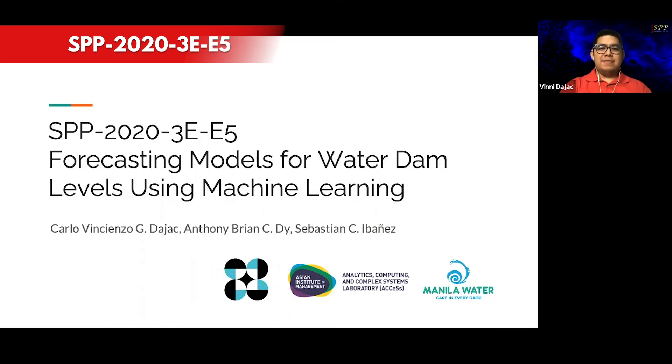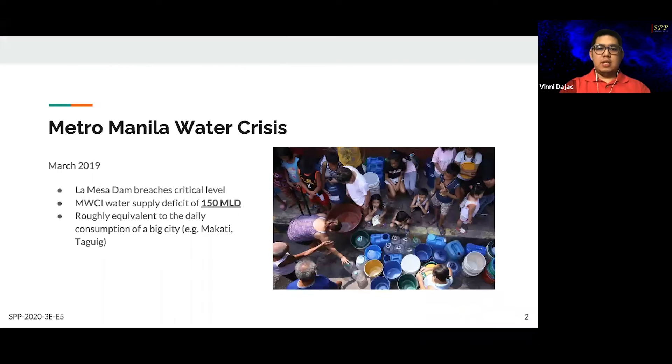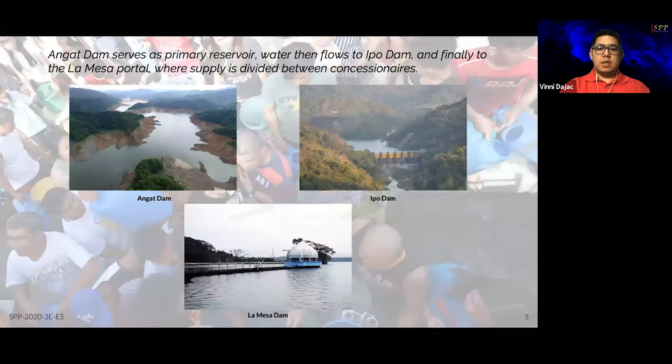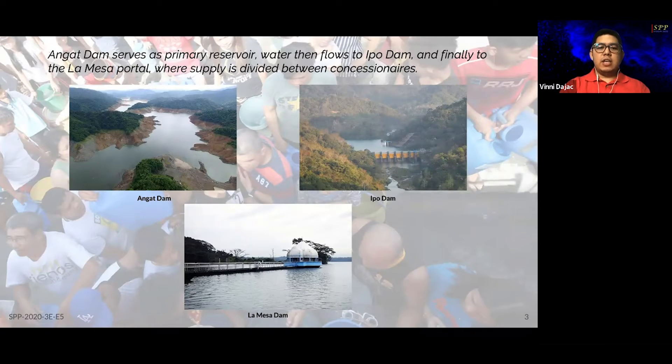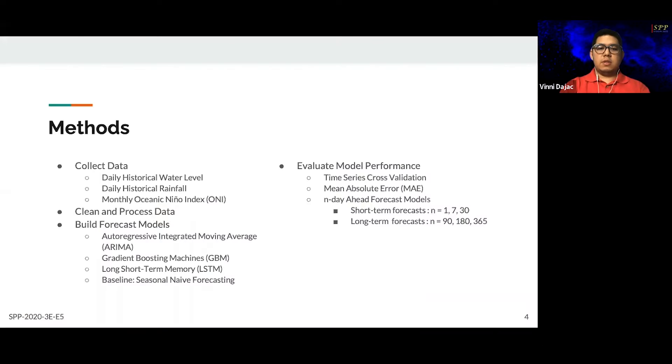Hello, everyone. I am Vinnie Dahak. On behalf of my colleagues Bryan and Basti from AAM's Access Lab, I will be presenting our project entitled Forecasting Models for Water Dam Levels Using Machine Learning, a collaboration with DOST and Manila Water. About a year and a half ago, Metro Manila went through a water shortage crisis. People from all over the metro lined up for water after services were interrupted on a rotating basis. In this project, we used several machine learning models to forecast the water levels of Angat, Ipo, and La Mesa Dams, the main sources of Metro Manila's water supply.